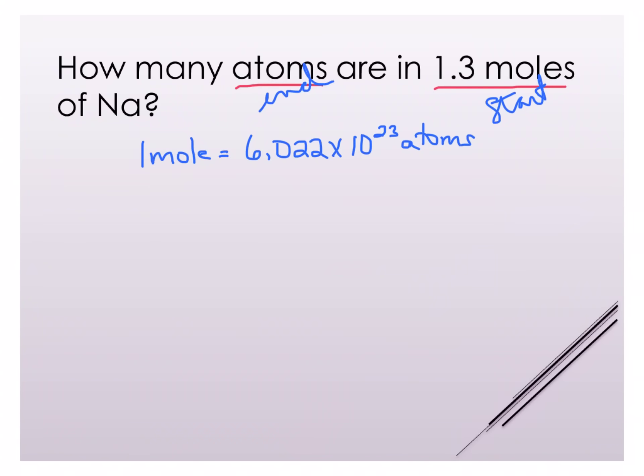So we'll start with our given number here, 1.3 moles. I know that when I set up the problem moles must go on the bottom because I need moles to cancel out. And so I say one mole on the bottom and I have 6.022 times 10 to the 23rd atoms.